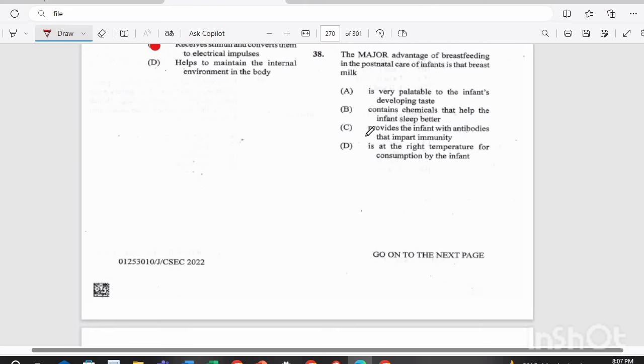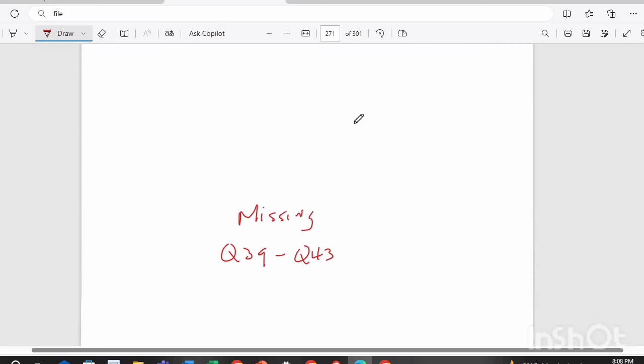Question 38. The major advantage of breastfeeding in the postnatal care of infants is that breast milk, A, is very palatable to the infant's developing taste, B, contains chemicals that help the infant sleep better, C, provides the infant with antibodies that impart immunity, or D, is at the right temperature for the consumption by the infant. The answer there is C, it provides the infant with antibodies that impart immunity.